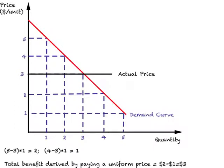But what this person encounters is a uniform market price for this product. Let's call it the actual price — where this person has to pay three dollars for the first unit, three dollars for the second unit, and three dollars for the third unit — a uniform or constant price. But remember, this person was willing to pay a maximum price of five dollars for the first unit, so because of this uniform price this person is able to derive some benefit from this market transaction.